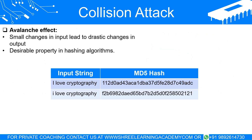Avalanche effect and its significance. The avalanche effect is a desirable property in cryptographic algorithms, especially in hash functions. It implies that even a small change in the input should produce such a drastic change in the output that the new hash value appears uncorrelated with the old hash value. This feature adds an extra layer of security, making it nearly impossible to predict how a small change in input will affect the output. For example, consider two nearly identical phrases: 'I love cryptography' and 'I Love cryptography.' Even this minute change in capitalization should, due to the avalanche effect, result in completely different hash values when processed through a robust hash function.